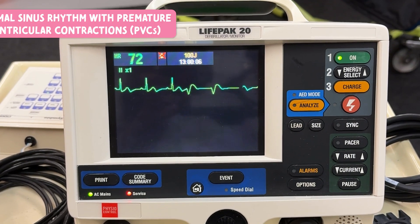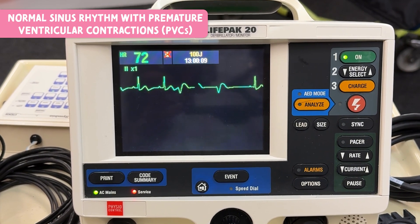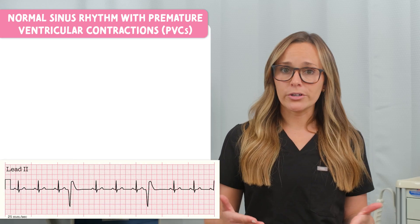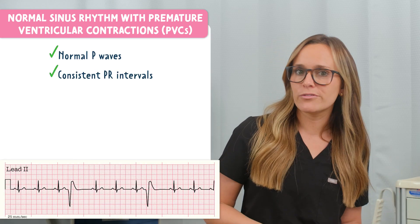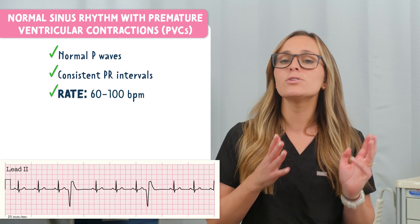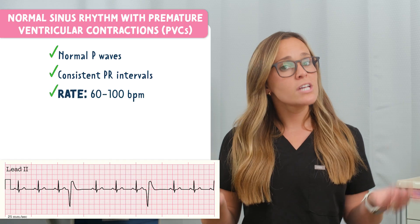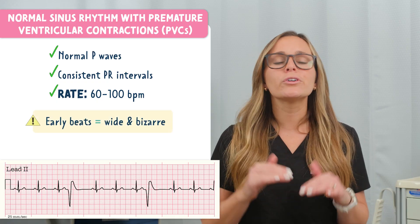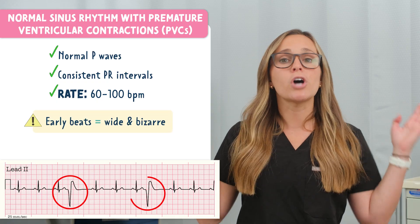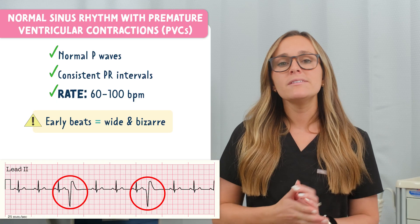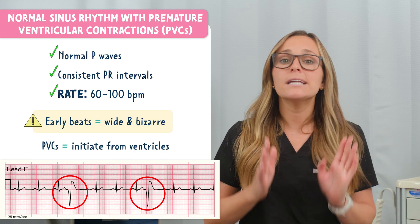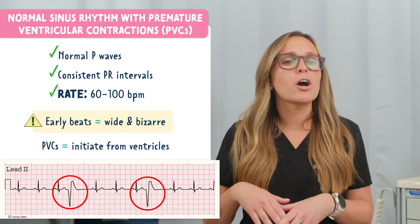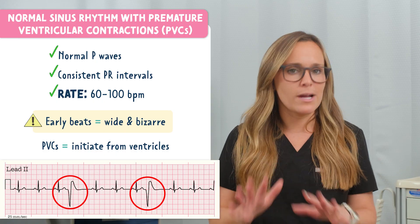This is normal sinus rhythm with premature ventricular contractions or PVCs. The underlying rhythm is regular with normal P waves, consistent PR intervals, and a rate of 60 to 100 beats per minute. But what stands out are those early beats that are wide and bizarre looking — that's the PVCs. PVCs come from the ventricles, not the SA node, so they don't follow the typical conduction pathway and are randomly interrupting the regular rhythm.